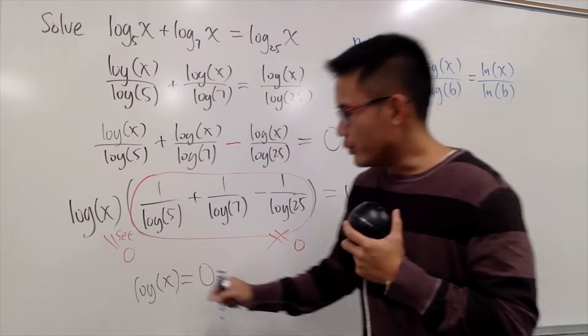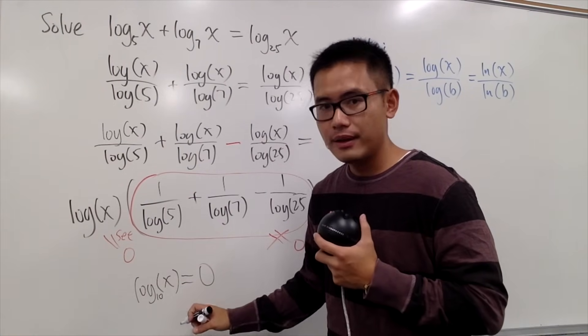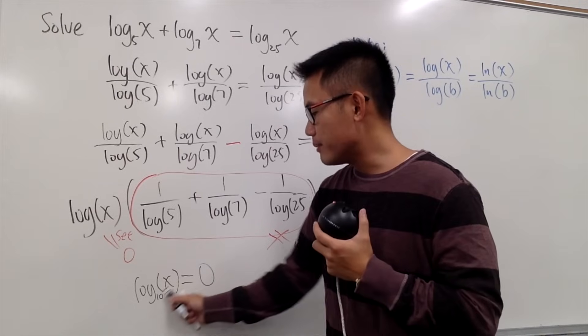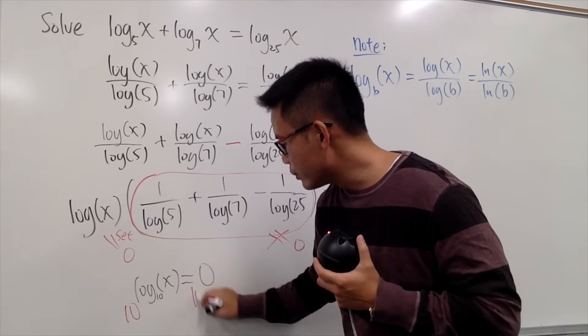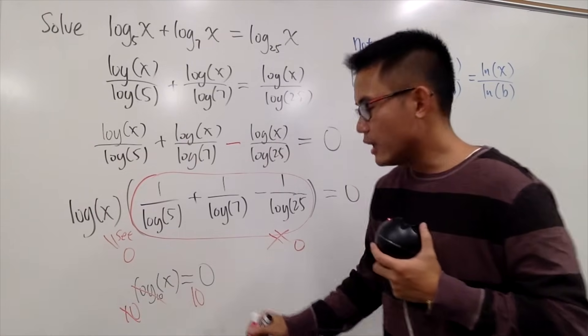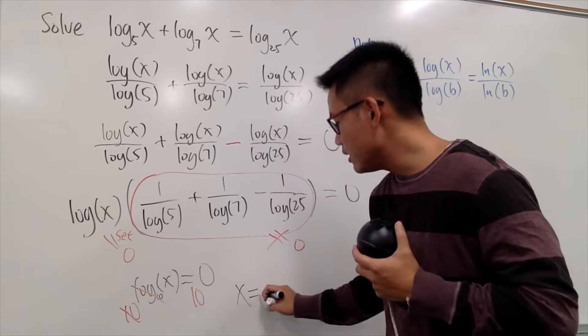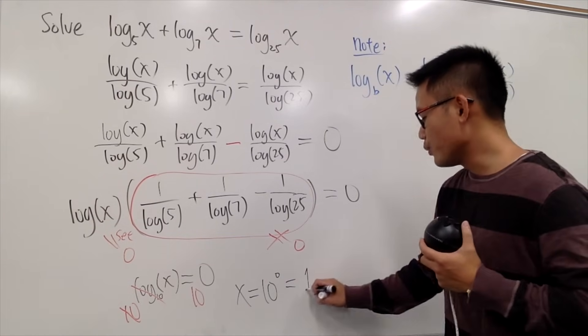Another way to do it is that, you know, this is log, technically, with a base 10. And, what we'll do is, we pretend both sides are the exponent, and we do 10 to this power, and we do 10 to that power, so that this and that will cancel. So, we will have x to be 10 to the 0 power, namely, of course, it's just going to be 1, right?